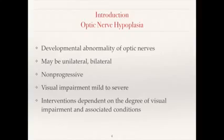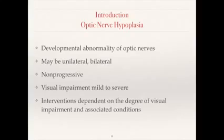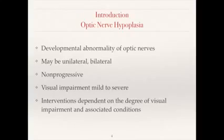Neuroimaging such as MRI or CT scanning is not adequate to make the diagnosis of ONH. One or both optic nerves may be affected. ONH may be isolated or part of other functional and anatomical abnormalities of the central nervous system. There is an increasing frequency of ONH for uncertain reasons, and there is a diverse impact on growth and development of the child. The interventions for each child depend on the degree of visual impairment and associated conditions.